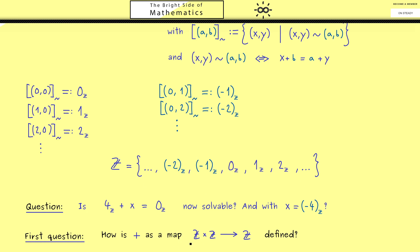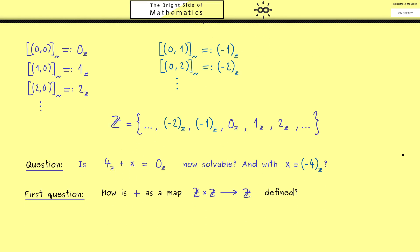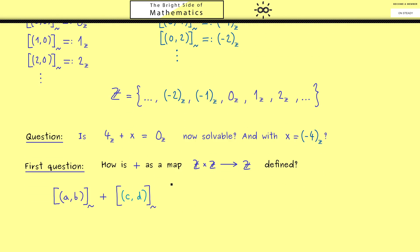Therefore, the first question we should answer is what is the addition now as a map that gets two integers as an input. I would say let's immediately do that. So let's take two arbitrary integers, which means two equivalence classes, and as always they are represented with two pairs.